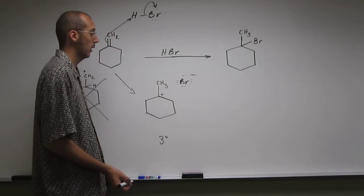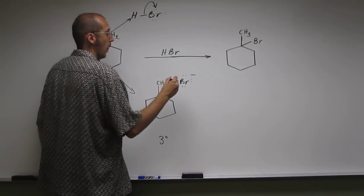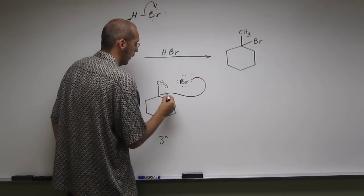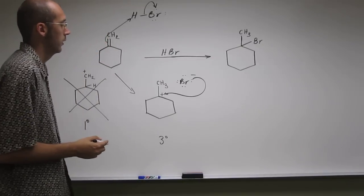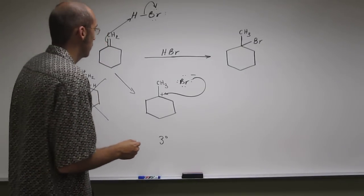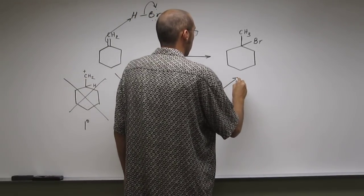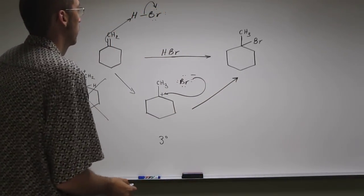And remember, we call this Markovnikov addition. What's going to happen now is that Br is going to attack that tertiary carbocation and make the product like that.